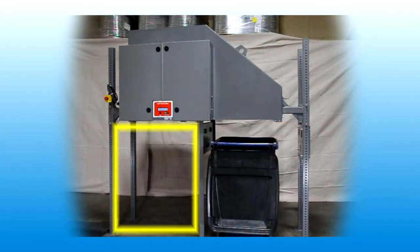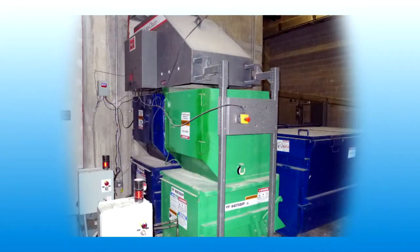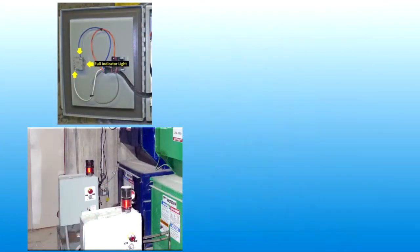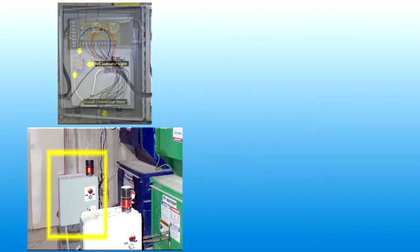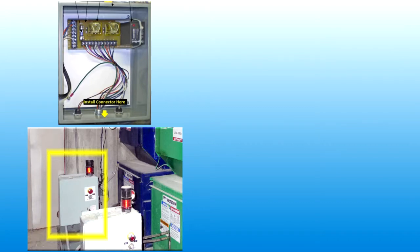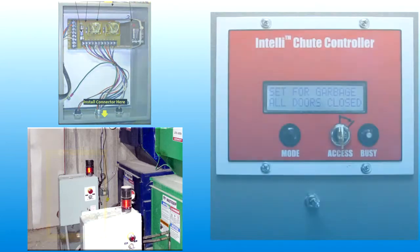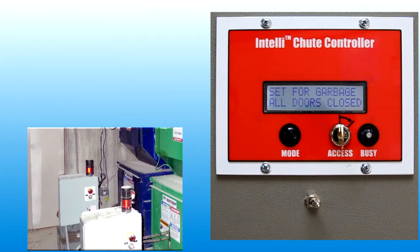Optional compactor full interface kits are used with trash compactor equipment instead of cart sensors. The interface kit detects a compactor full signal and generates a cart full sensor feedback signal for the sorter control system. When a compactor full signal is detected, the sorter control system responds in the same manner as a cart full condition.